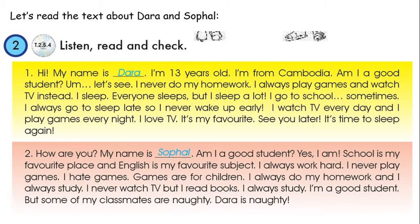Today we are reading two texts about Dara and Sophal. At the end of the texts, you will compare who always does this, who always does that, who sometimes does this and who sometimes does that. Let's read the texts all together. Text number one — listen carefully, I will read it out loud for you.